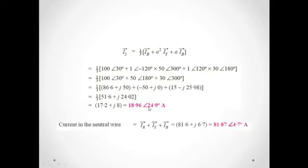The last part of this numerical is to find the total current in the neutral wire. The total current is the summation of IR, IY, and IB. After summing these three, we obtain the neutral wire current.